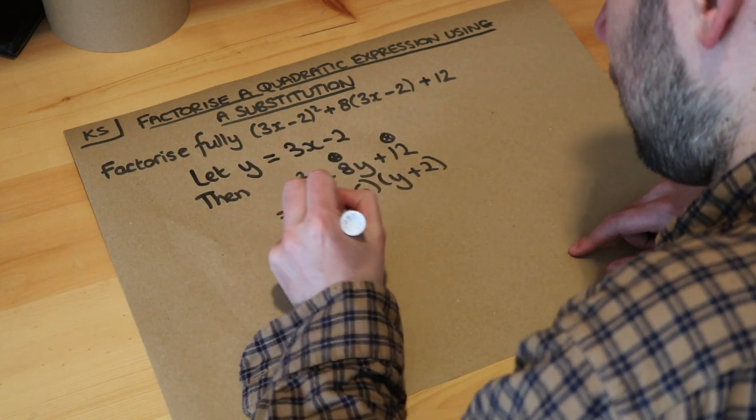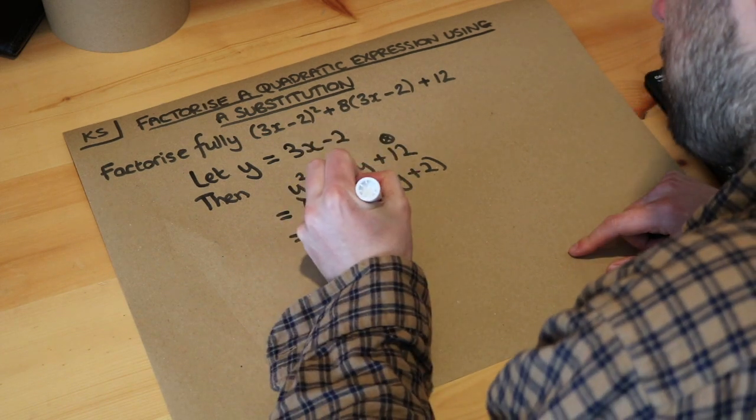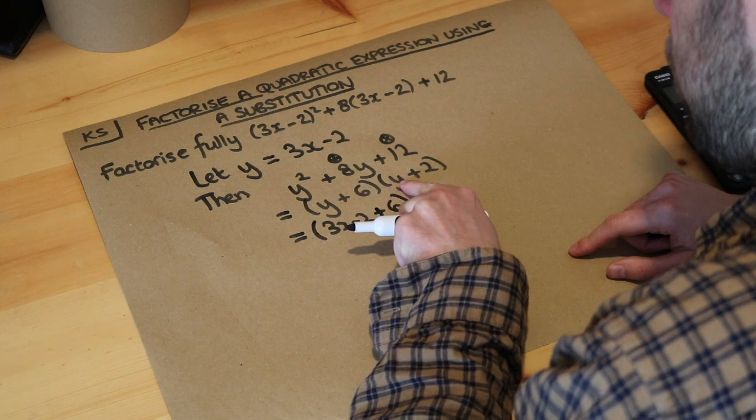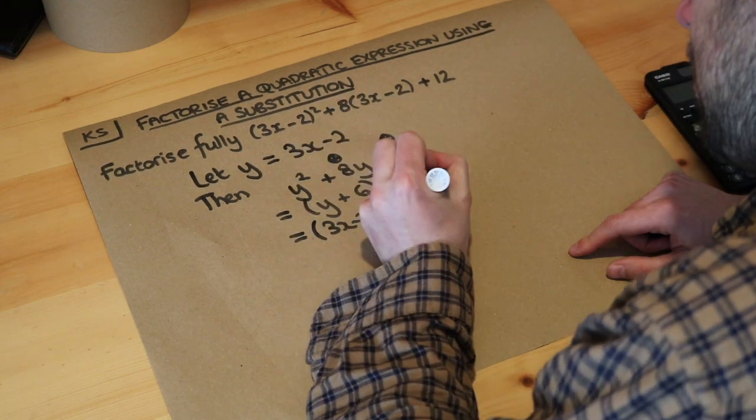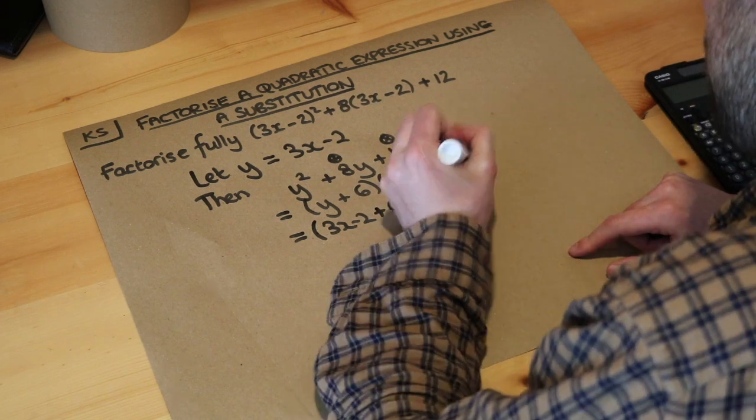So that y is 3x minus 2 plus the 6. And then we've got this y here so open bracket, y is 3x minus 2. And then we've got that plus 2 there.